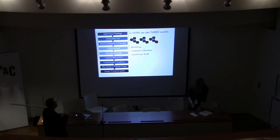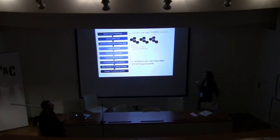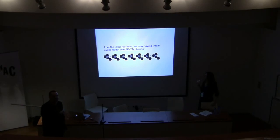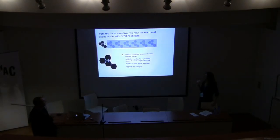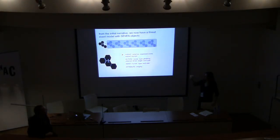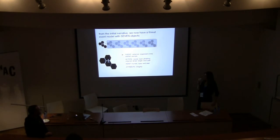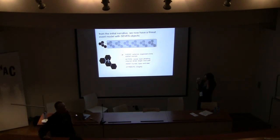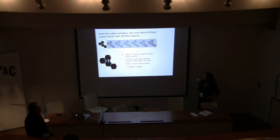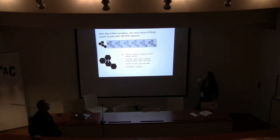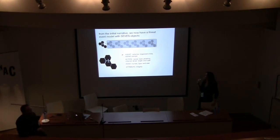We see three security events and can describe four separate fraud events, giving us a seven-object model. Using those four A's from VERIS to describe the first: we had an Agent that was external organized crime from Eastern Europe. The Action was a social attack — type: phishing, channel: email, target: end user. The Asset was human, type: end user, and the Attribute was integrity.